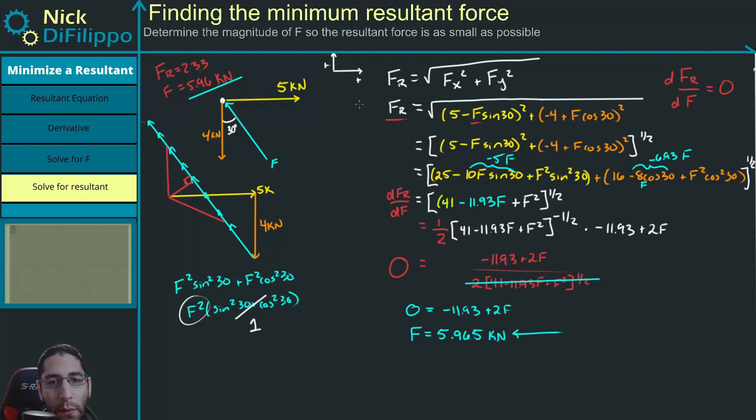So now what we want to do is we want to go back to one of these equations. This one seems like it might be the easiest to work with because we took the derivative of that. But that's really just my, right, if I work through, this is really just what FR is equal to. And then this next step was the derivative. So if we get my FR is equal to the square root of 41 minus 11.93 times 5.965 plus 5.965 squared.